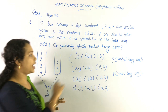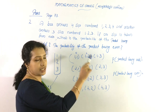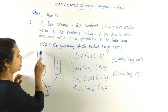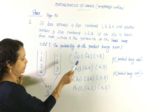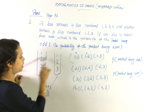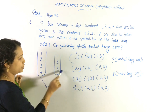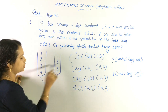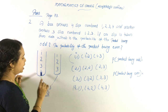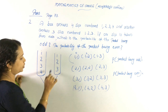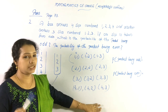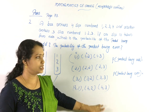The pairs are: (1,1), (1,2), (1,3), (2,1), (2,2), (2,3), (3,1), (3,2), (3,3), (4,1), (4,2), (4,3). Total 12 pairs.